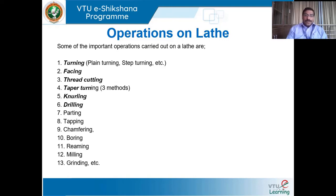There are two more operations which are left: taper turning operation and drilling operation. Operations such as turning, facing, thread cutting, and knurling are inherent operations which can be performed on a lathe very conveniently. Whereas other operations like drilling, boring, reaming, grinding, and milling can also be performed on other machine tools — for example, grinding on a grinding machine, and tapping on a drilling machine.